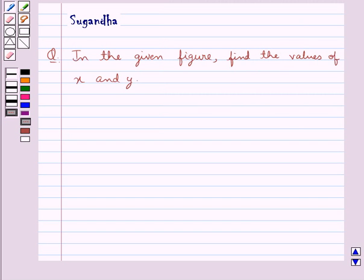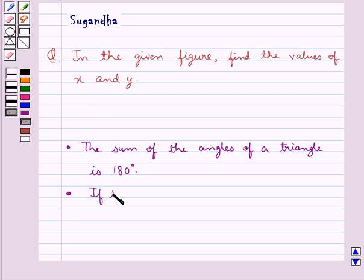First, let's recall some facts which say that the sum of the angles of a triangle is 180 degrees.